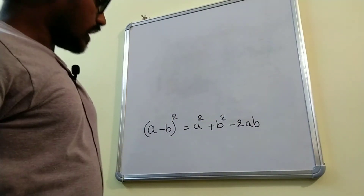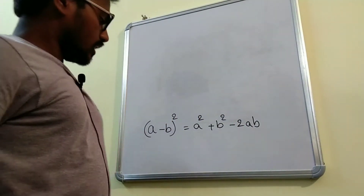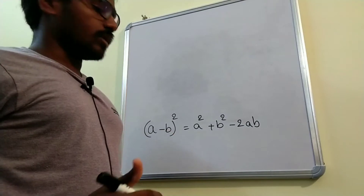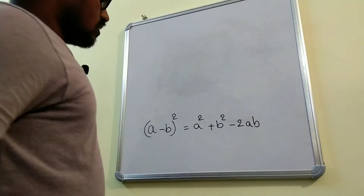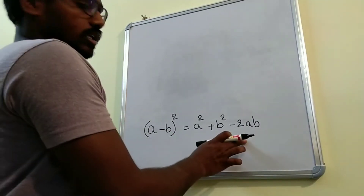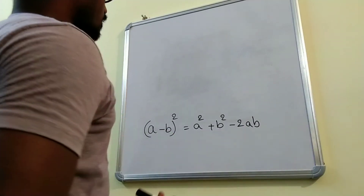In the last video, we have proven a plus b whole square equal to a square plus b square plus 2ab. So we will prove this formula in a geometrical way.